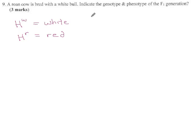There are three genotypes that can come out of that. You can have HWHW, which gives you a white animal. You can have, I'll get to that one in a minute, HRHR